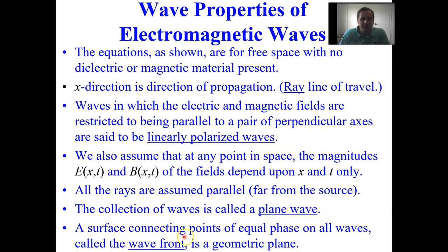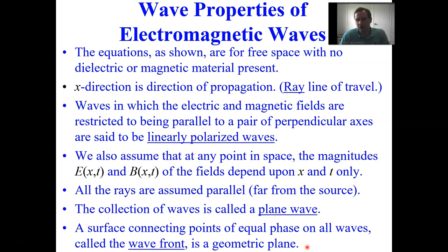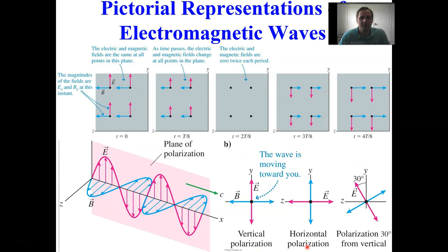The surface connecting points of equal phase of all waves is called a wave front, and that will be a geometric plane. Electromagnetic plane waves are the easiest way to analyze their geometry.